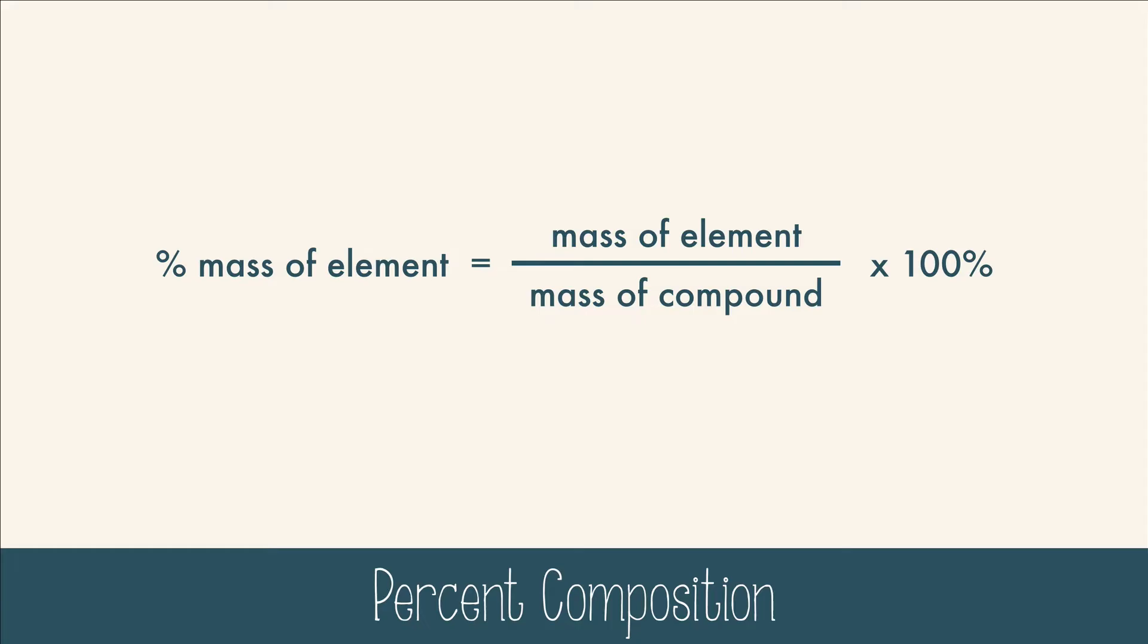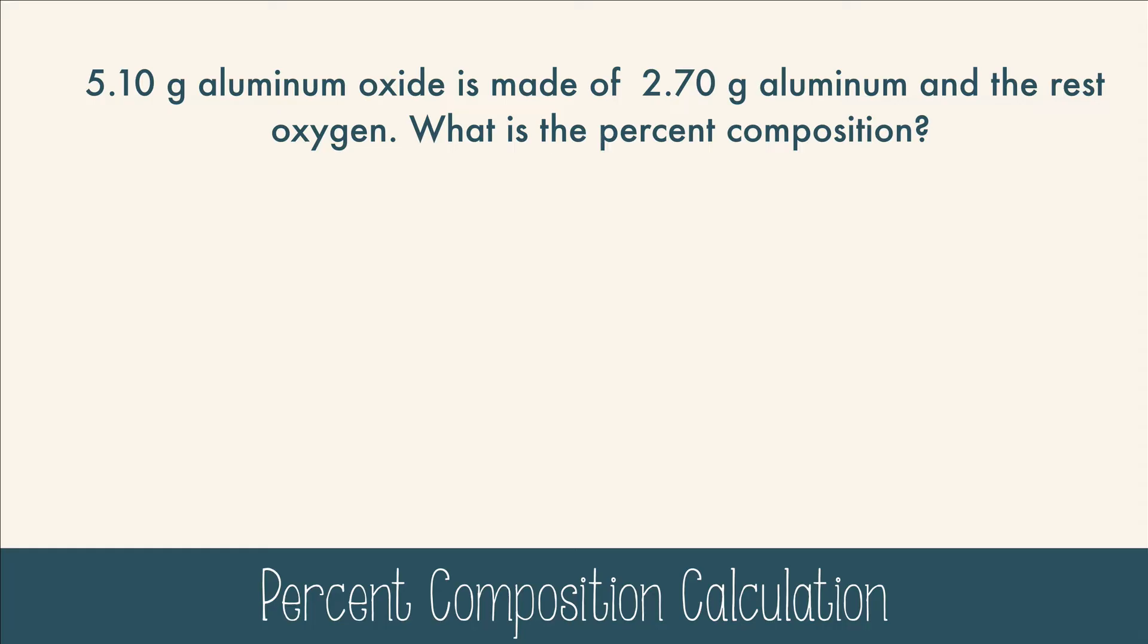Let's do a sample calculation. 5.1 grams of aluminum oxide is made of 2.7 grams of aluminum, and the rest is oxygen. What is the percent composition?